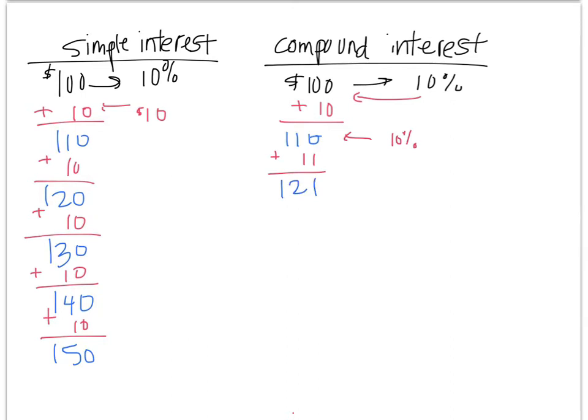But now, the next year, you get another 10%. And that's $12.10. So that would give you $133.10. And then you get another 10%. And that would be $13.31. So then you would add that. And you'd get $146.41.